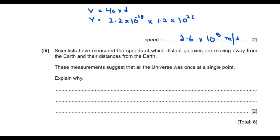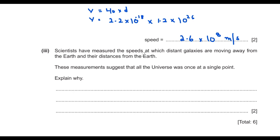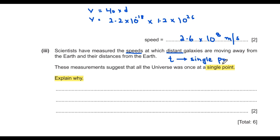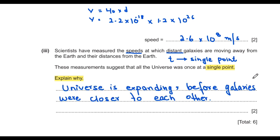Scientists have measured the speeds and distances of distant galaxies from Earth. By comparing these quantities and calculating time, they found that long ago all galaxies were at a single point, and expanded outward in what is known as the Big Bang. Since galaxies are moving away from Earth, the universe is expanding, and tracing back, all matter was once concentrated at a single point.